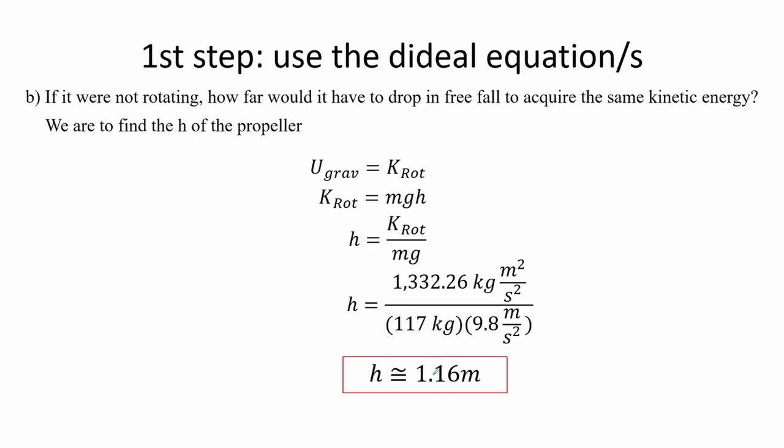For letter B, if the propeller were not rotating, we determine the height it would need to fall in free fall to acquire the same kinetic energy. We use the potential energy due to gravity since it provides the height parameter. Equating potential energy and kinetic energy — suggesting that kinetic energy is being converted to potential energy — and rewriting the expression for height, we get that the height is approximately 1.16 meters.